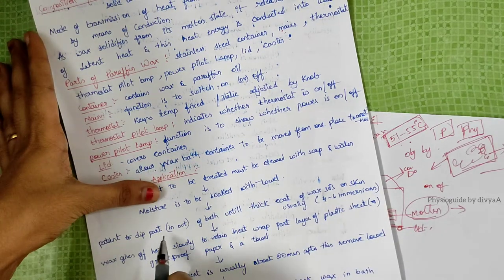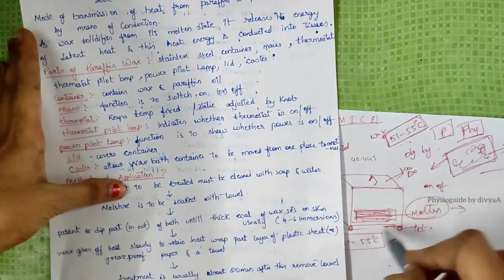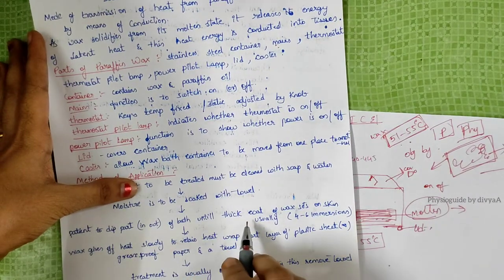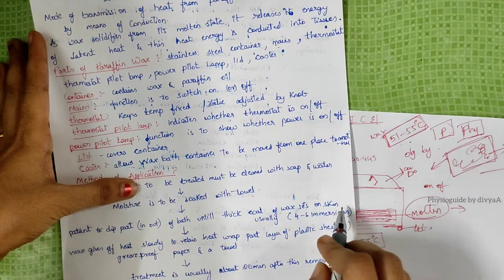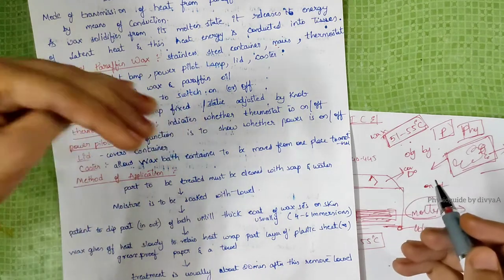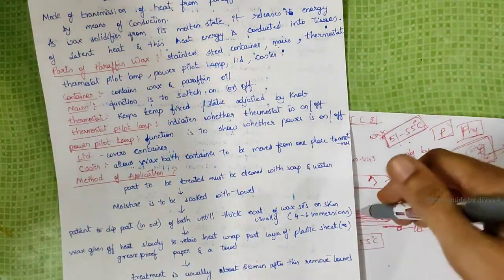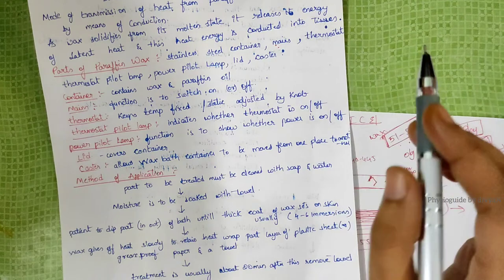Patient dips the part in and out of the paraffin wax bath until a thick coat of wax sets on the skin, usually four to five immersions. The part to be treated is soaked four to six times.